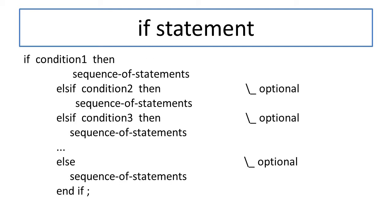Now let us look at the if-else statement. The structure is: if condition then sequence of statements; else if condition 2 then sequence of statements; else if condition 3 then sequence of statements — continuing until the last condition is satisfied — then else sequence of statements; end if. This is the structure for defining an if statement.